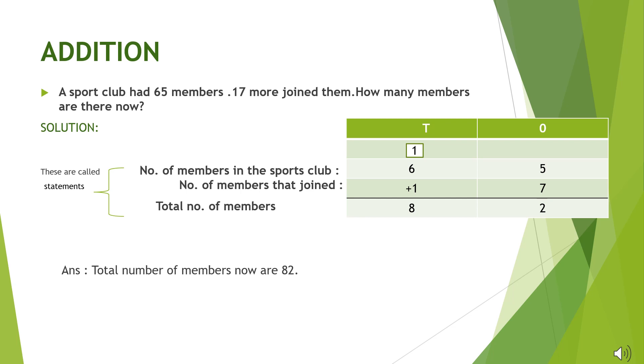Second statement will be number of members that joined, and write 17 next to it. Now we will add both the numbers starting from the ones column.